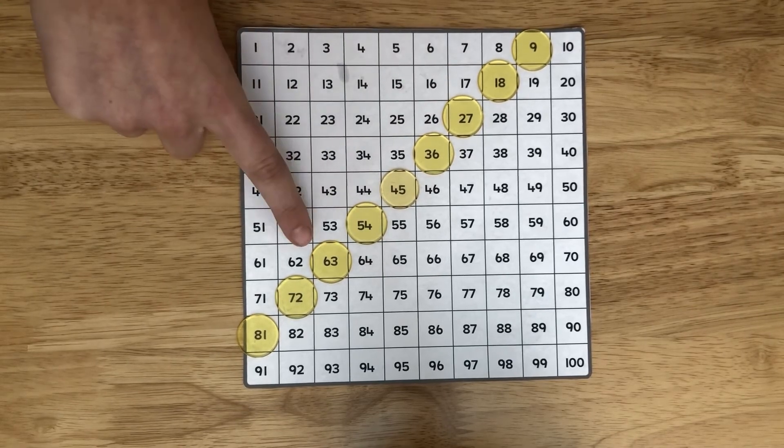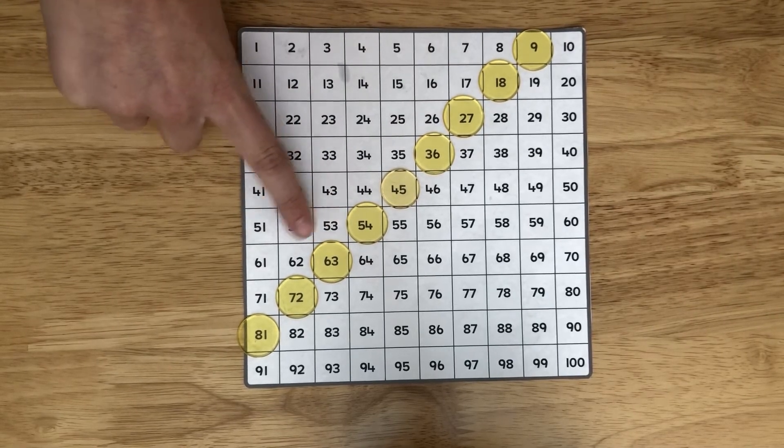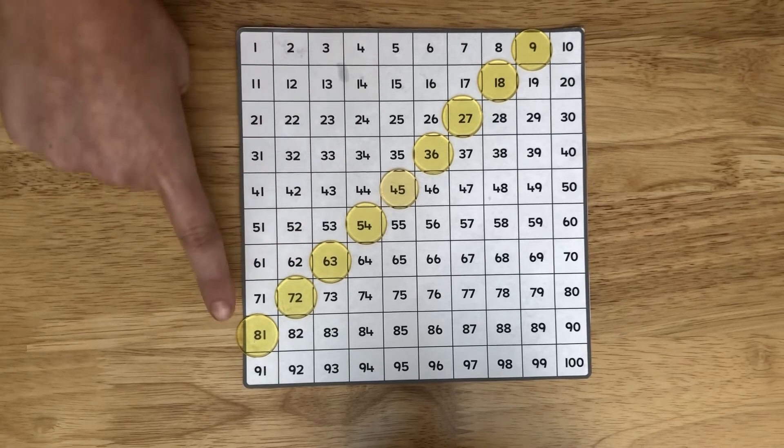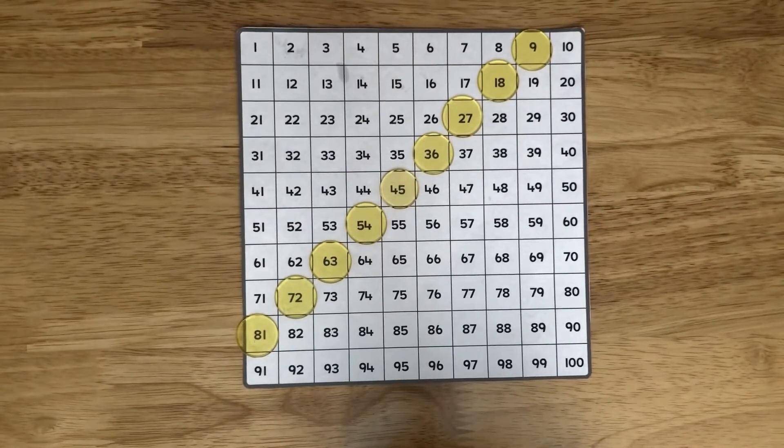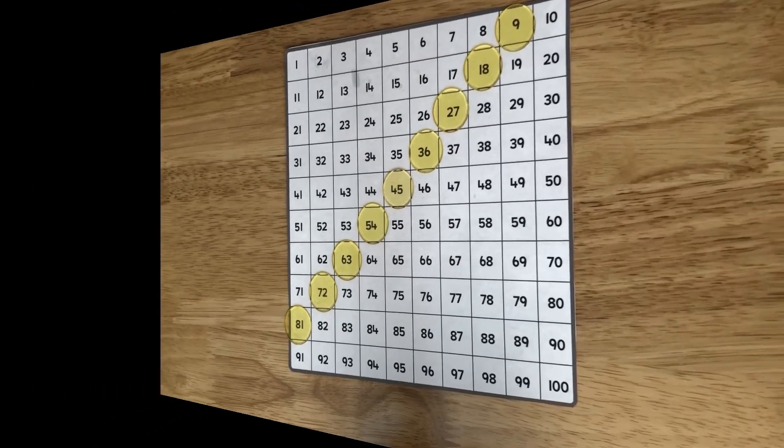5 and 4 is 9. 6 and 3 is 9. 7 and 2 is 9. And 8 and 1 is 9. That's pretty cool. So we know our answer will have to add up to 9.